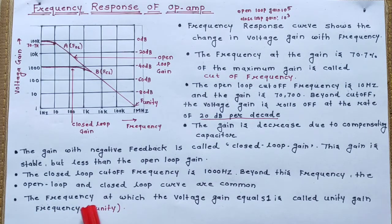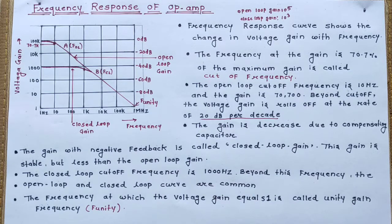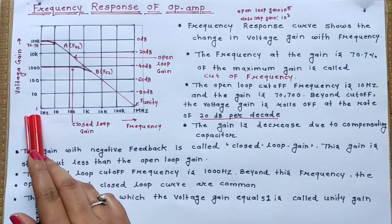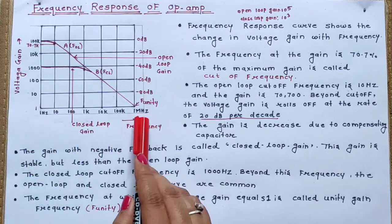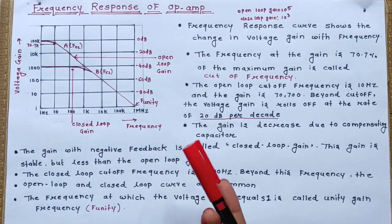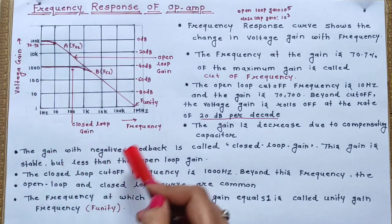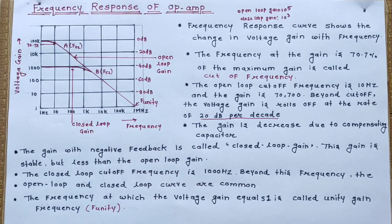The frequency at which the voltage gain equals 1 is called the unity gain frequency. In the frequency response curve, you can observe that at 1 MHz the voltage gain becomes equal to 1 — that is, unity. This frequency is called the unity gain frequency. This frequency response curve is drawn for IC 741.